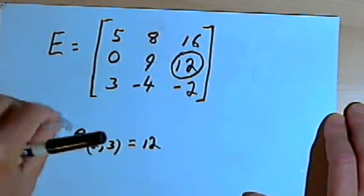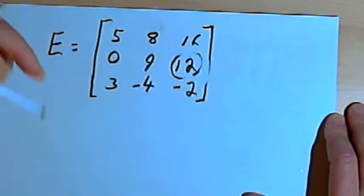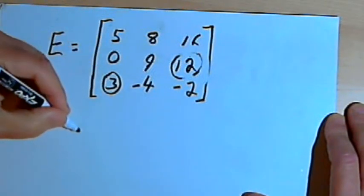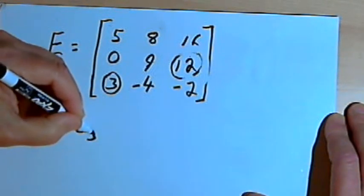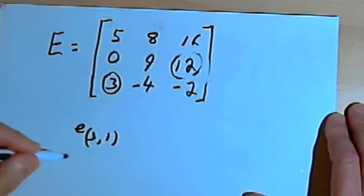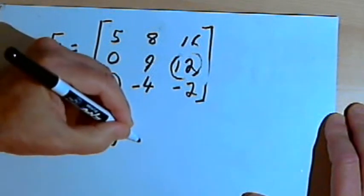If I wanted to talk about, instead of that 12, let's say this 3, then that would be E of, or in the third row, first column, E of 3 comma 1. And that would equal 3.